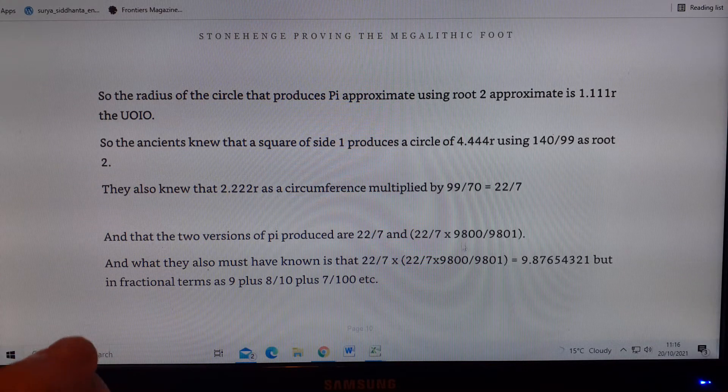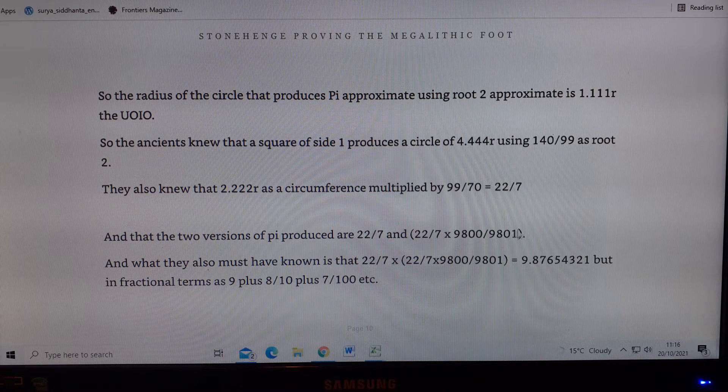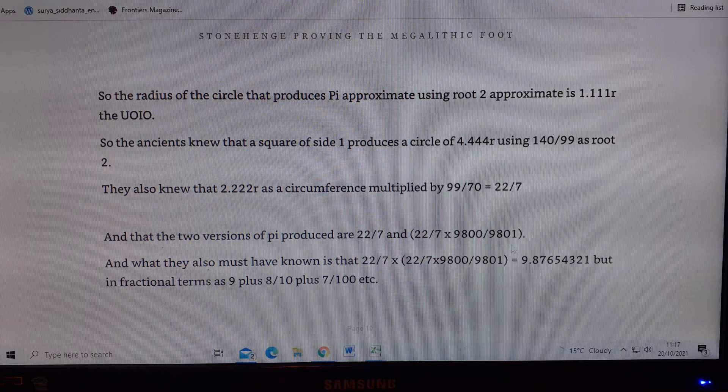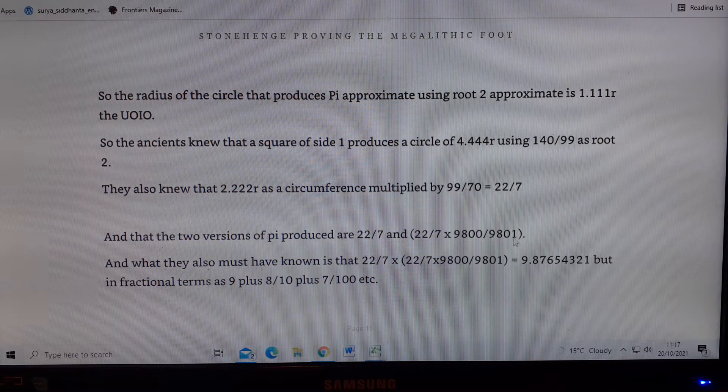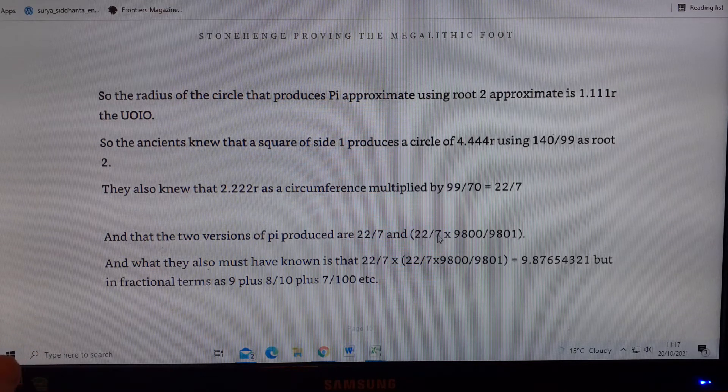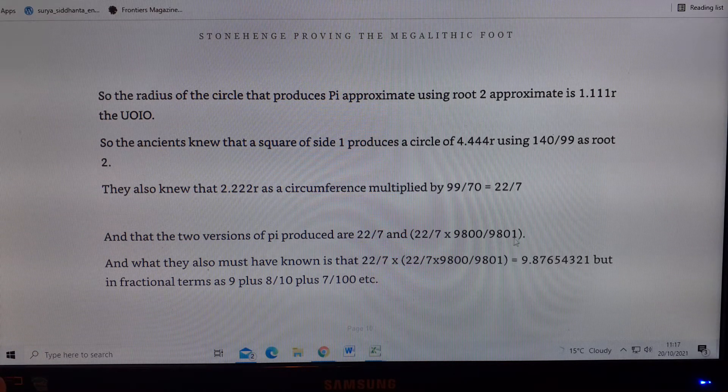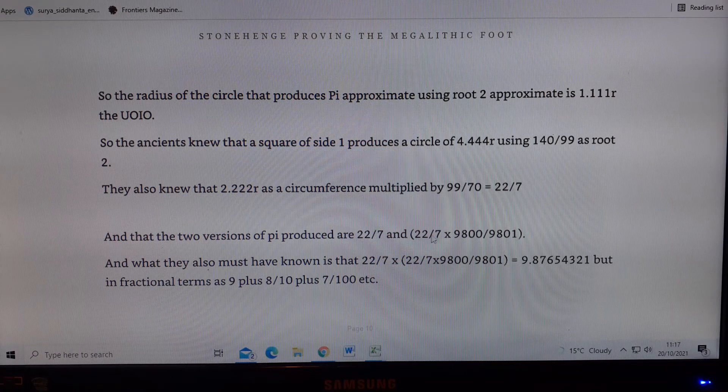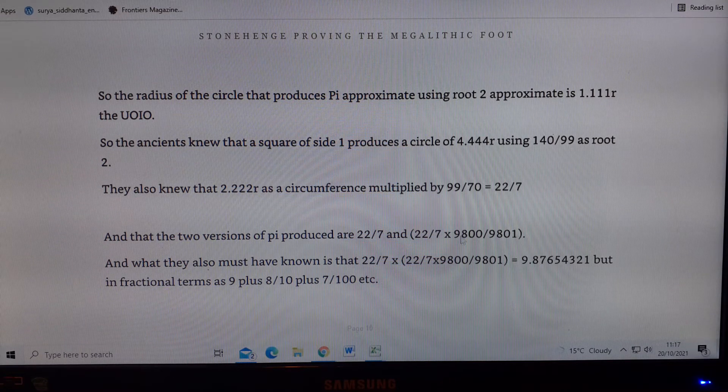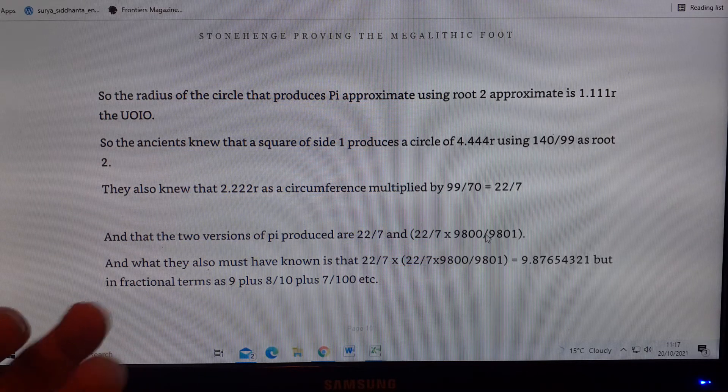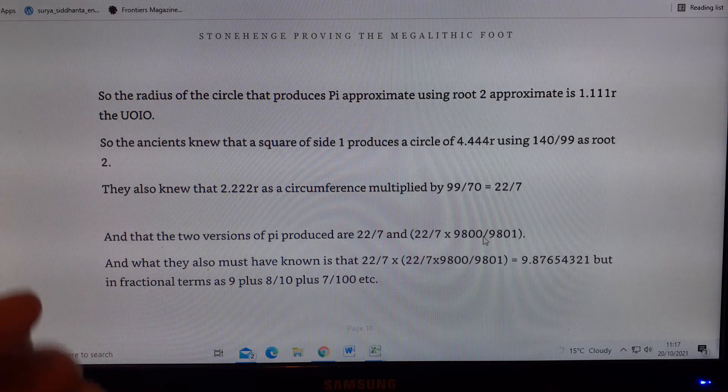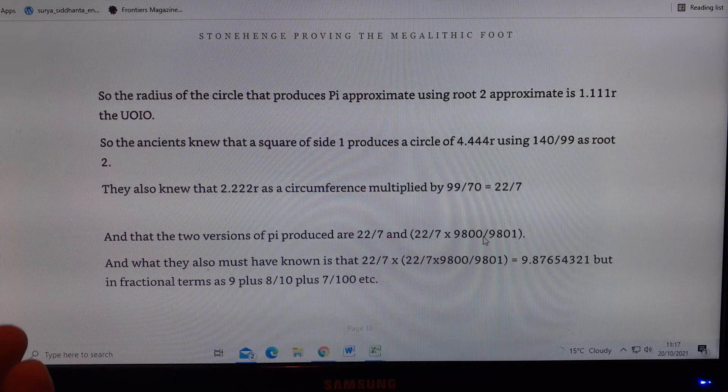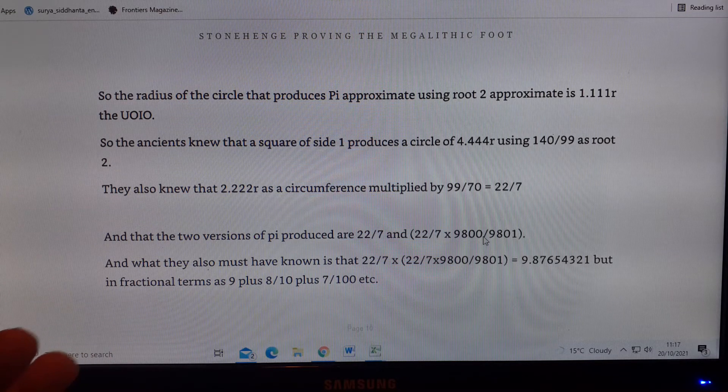What I found was this relationship between the two versions of Pi that they were using to get this number 9.87654321. They were using 9800 and 9801. The second version of Pi is 22 over 7 times 9800 divided by 9801. The version of Pi that can be used as a diameter is 22 over 7 plus the version of Pi that's produced using this added together and divided by 2. Then what you find is that version of Pi works exactly with root 2, the best approximation you can get from the spreadsheet, the Microsoft Excel spreadsheet that I use.